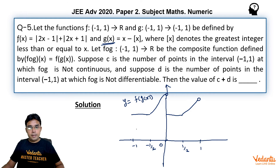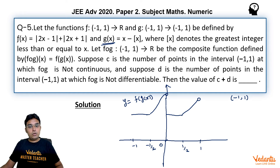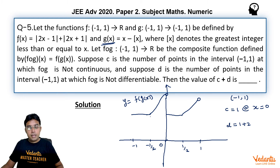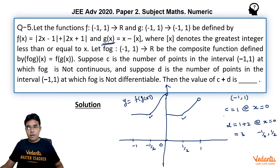From the graph of y = f(g(x)) on (-1,1), there is only one point of discontinuity: x = 0. At x = ±1/2 the function has corner points but is continuous. So c = 1. For non-differentiability: x = 0 contributes 1 point (discontinuity), and x = -1/2 and x = 1/2 are corner points contributing 2 more, giving d = 3. Therefore c + d = 4.